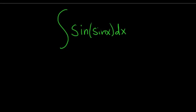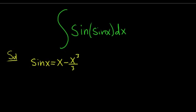In this video, we're going to integrate the sine of the sine of x. We'll start by writing down the Maclaurin series for sine x. Since sine is an odd function, it has only odd powers of x. The first odd power is x, and then the signs alternate: minus x cubed over 3 factorial, plus x to the 5 over 5 factorial, et cetera. That's the Maclaurin series for sine.